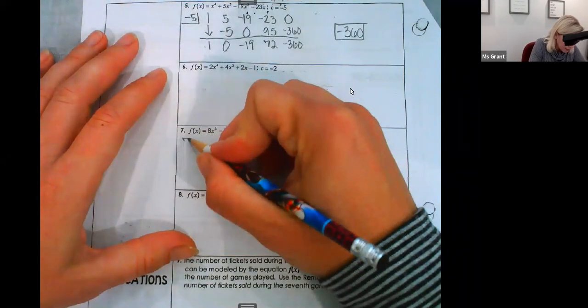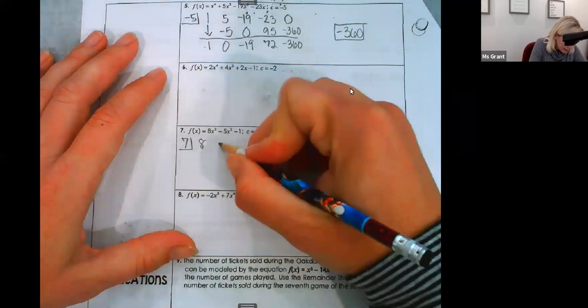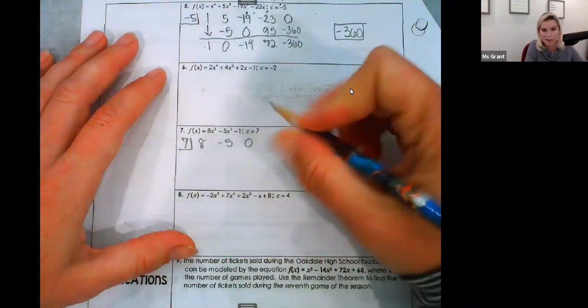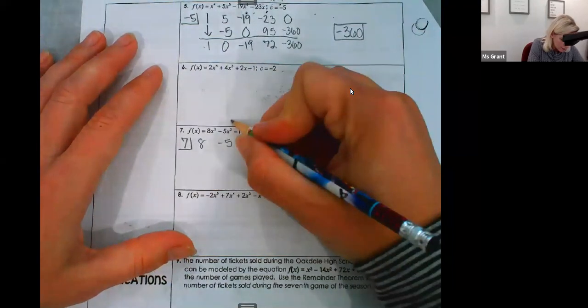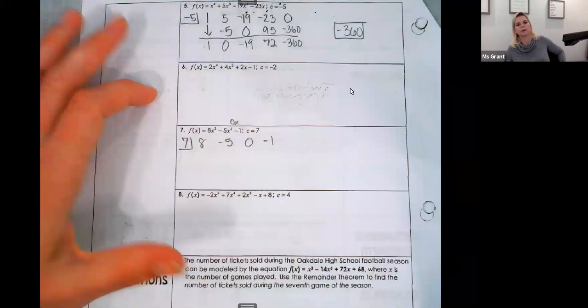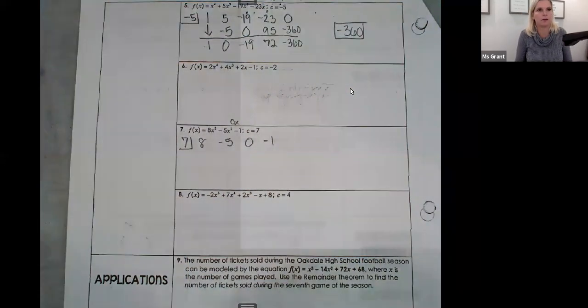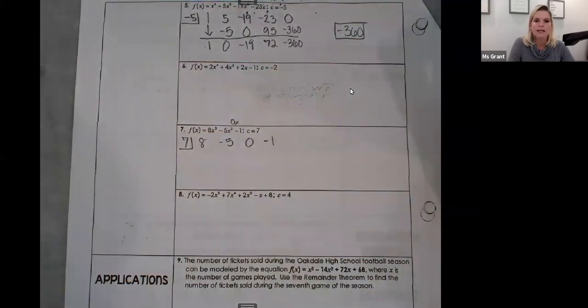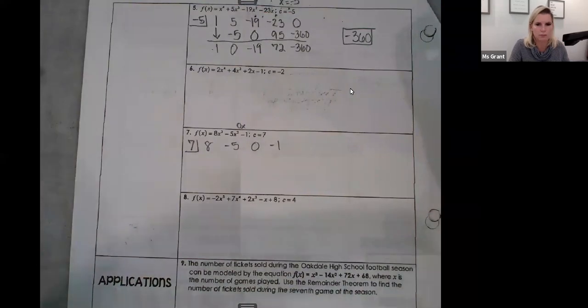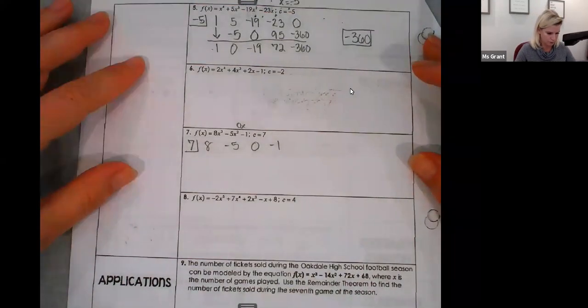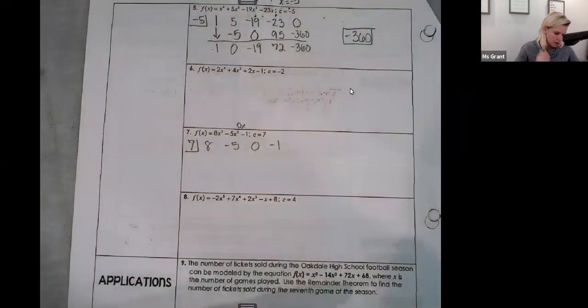Number seven is the same. I'll set it up: eight, negative five, zero — x to the power of one is missing — and then negative one. I'm not going to work it all the way through because it's the same process and you understand it.